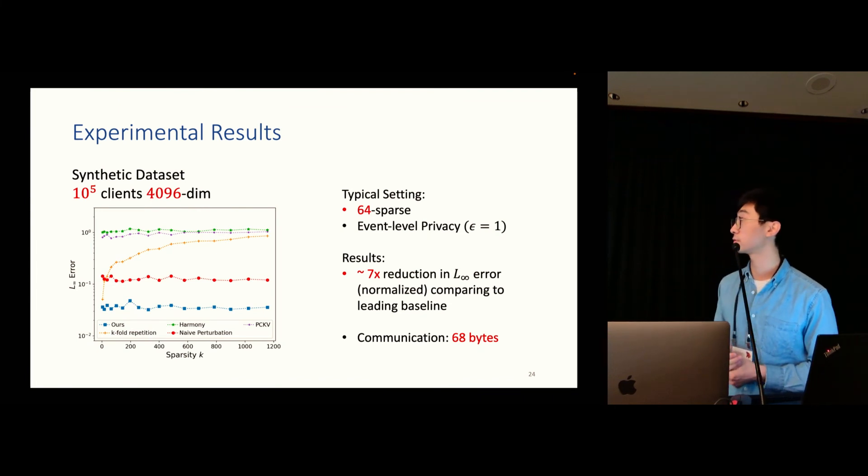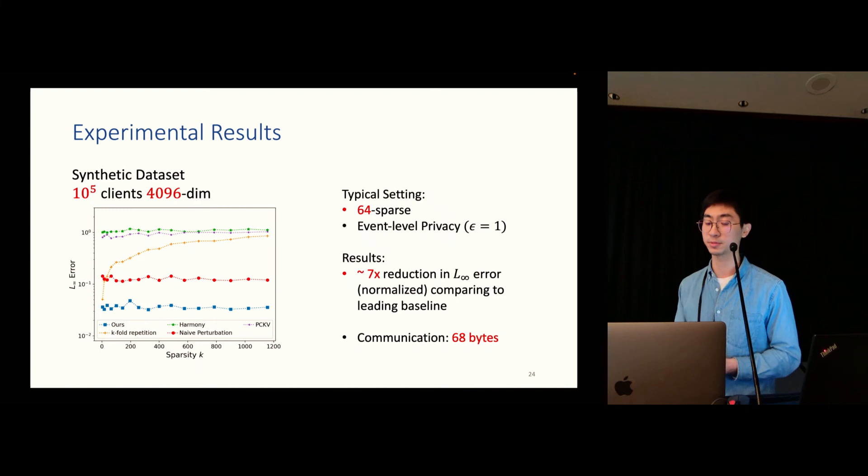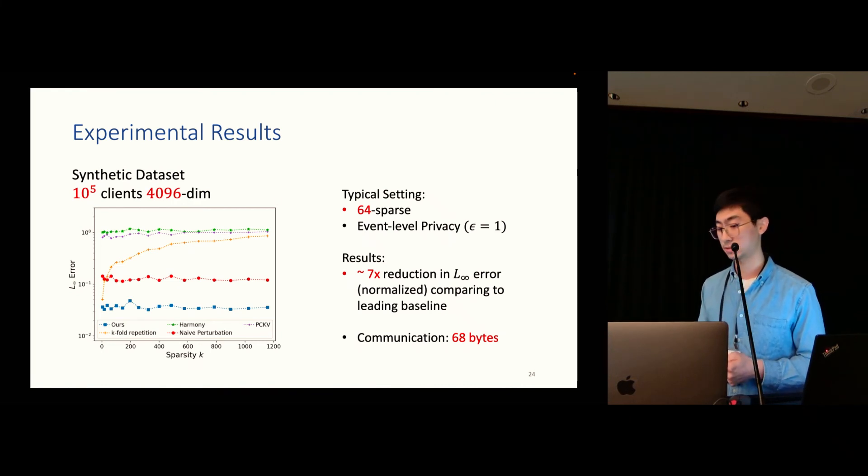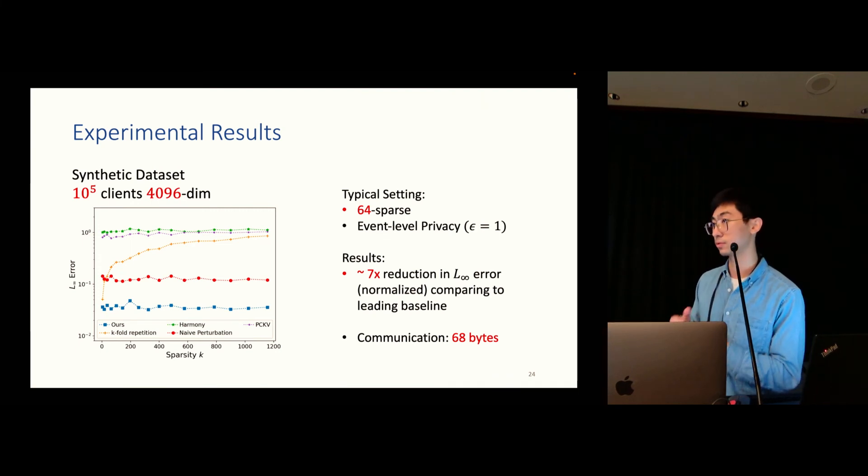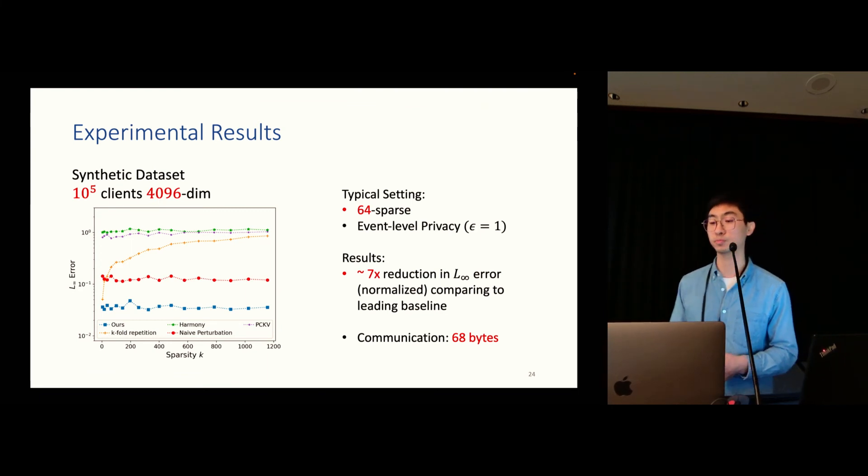Here are some experimental results for this synthetic data set. We have 10 to the 5 clients for 1096-dimensional vector. We're actually changing the sparsity k from very sparse to very dense. We're plotting the L infinity error here, and our scheme is the lowest line here. So you can see our scheme actually outperforms other schemes. And in a typical setting, where it is 64 sparse, so it's a pretty sparse vector, and given the event level privacy constraint, our scheme shows seven times reduction in the L infinity error, and the communication cost per client is only 68 bytes, so it's pretty efficient.